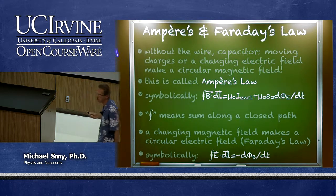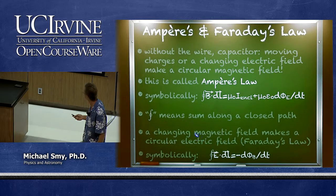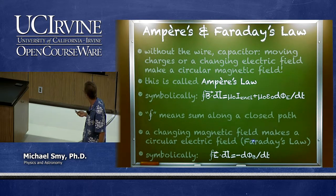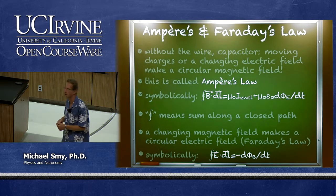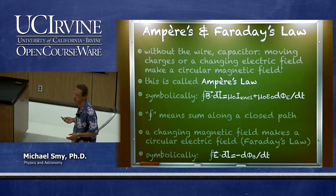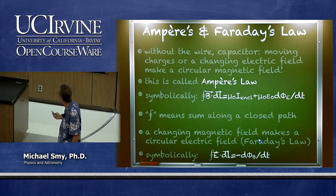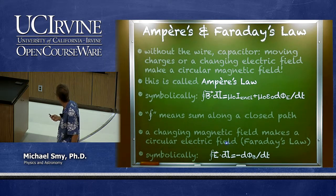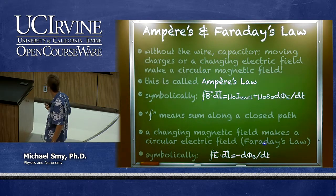There is also Faraday's law, which is the inverse of Ampere's law. Basically, a changing magnetic field makes a circular electric field. You've probably encountered this before because it is induction — you produce an electric field from a changing magnetic field. That is called Faraday's law.